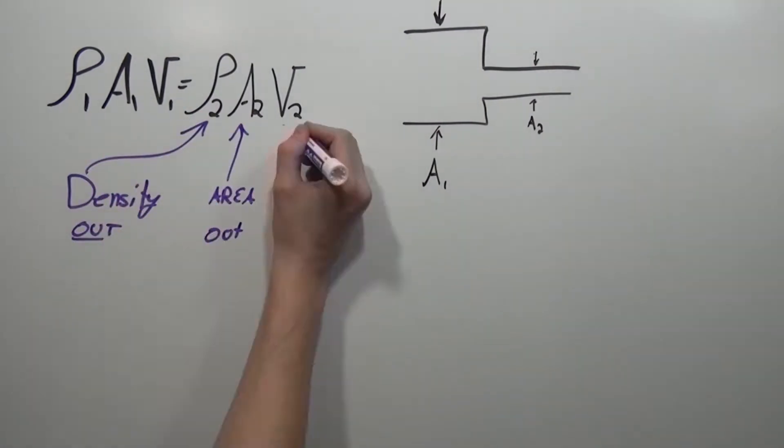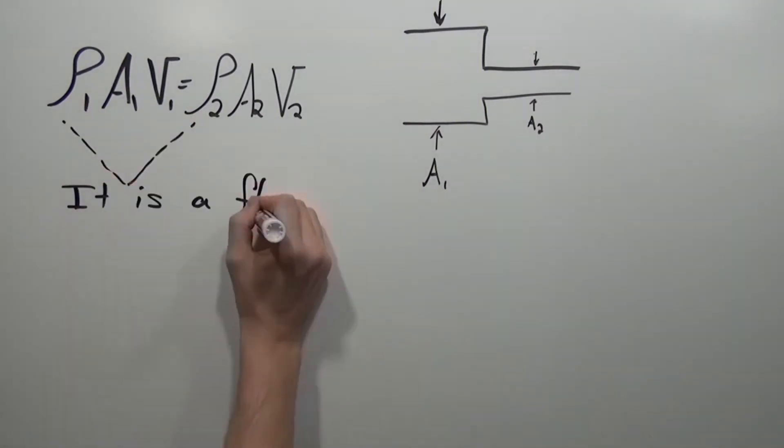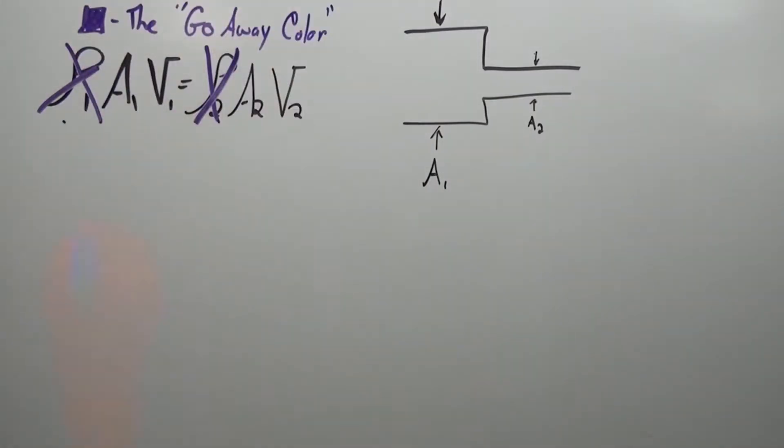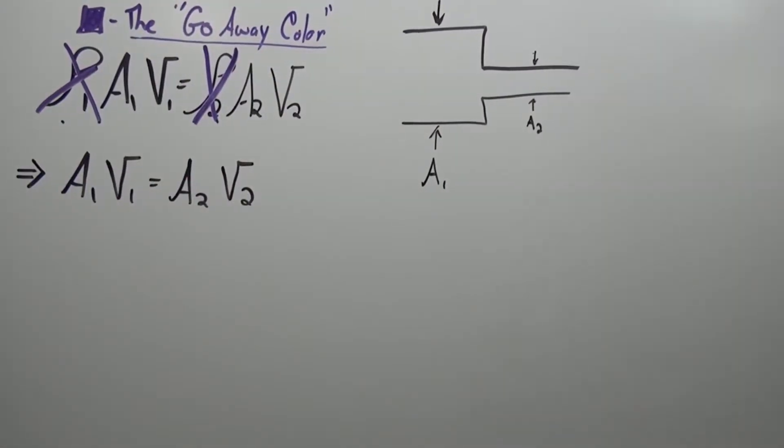Don't worry about this equation, it's just another way to write mass conservation. So we see here it's a fluid, so we can pretend the density cannot change, and we'll cross out the densities because they cancel each other out.